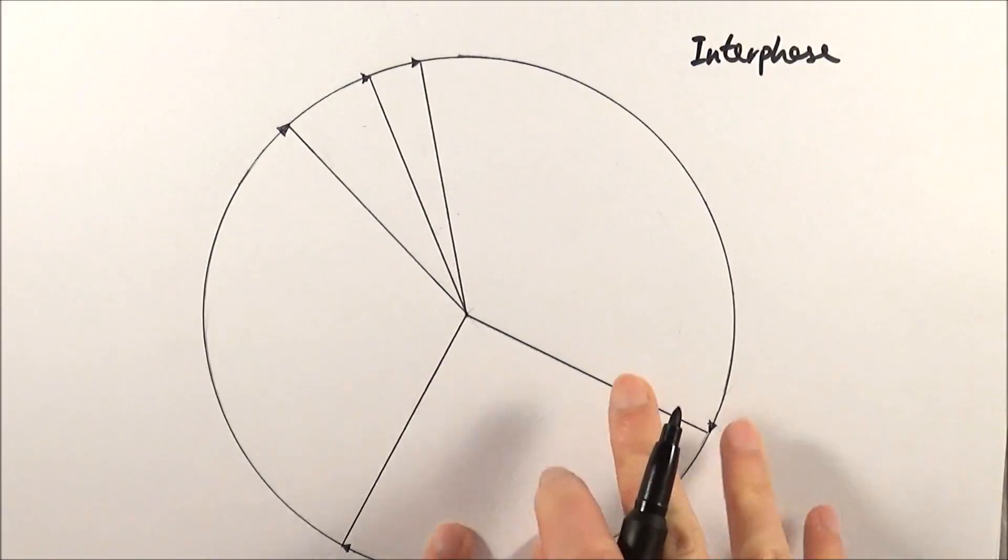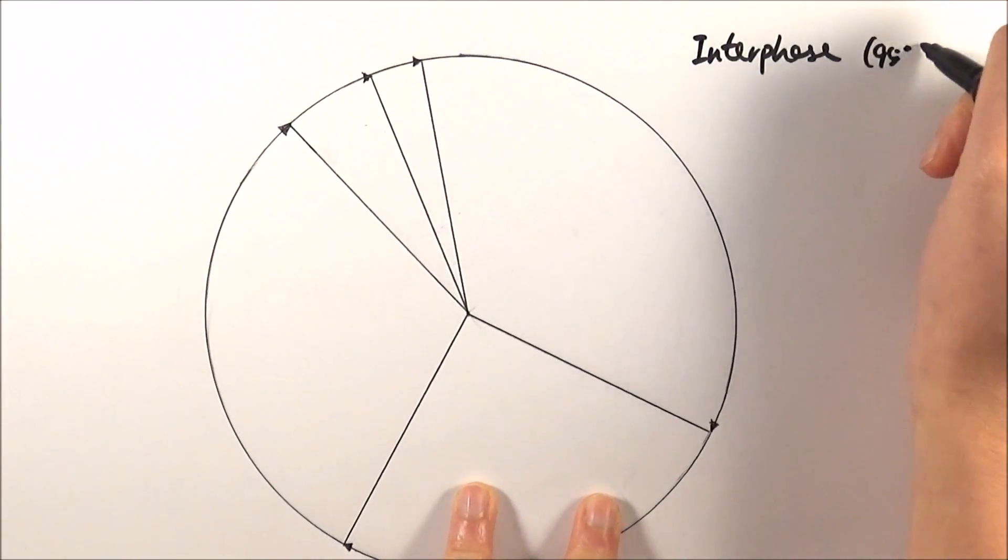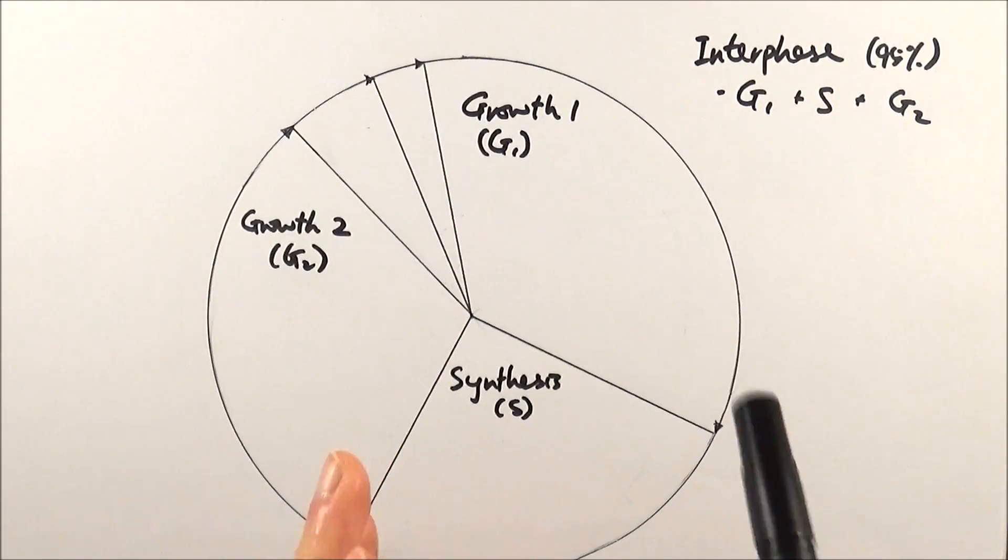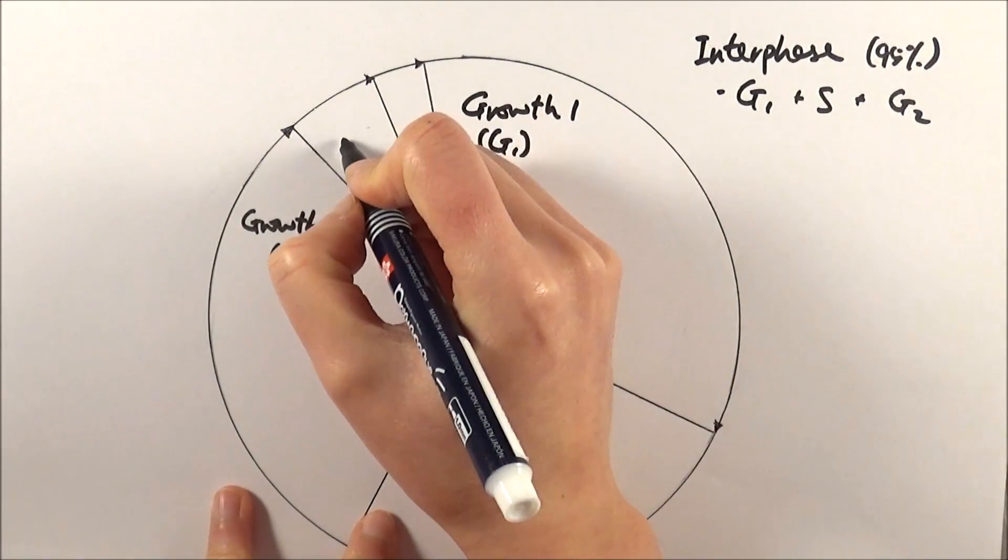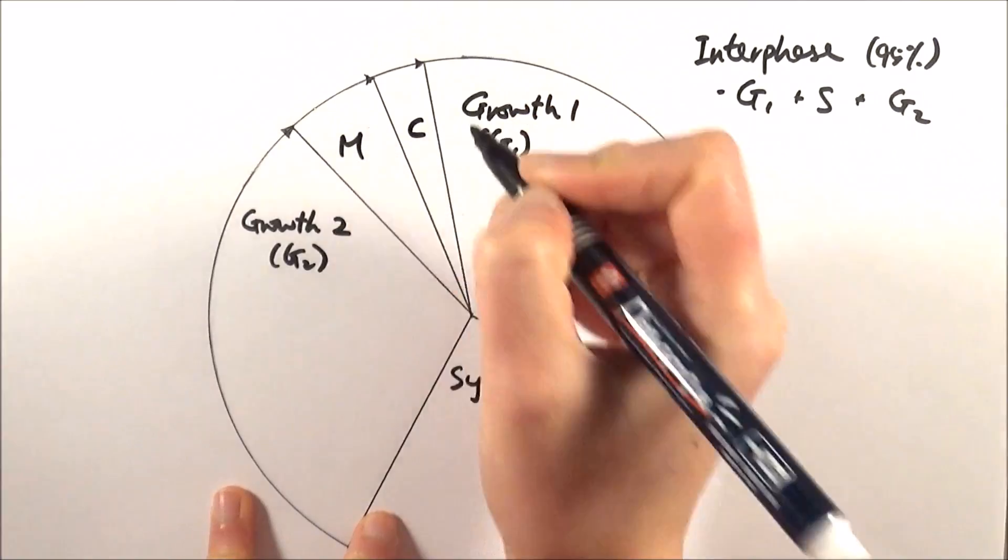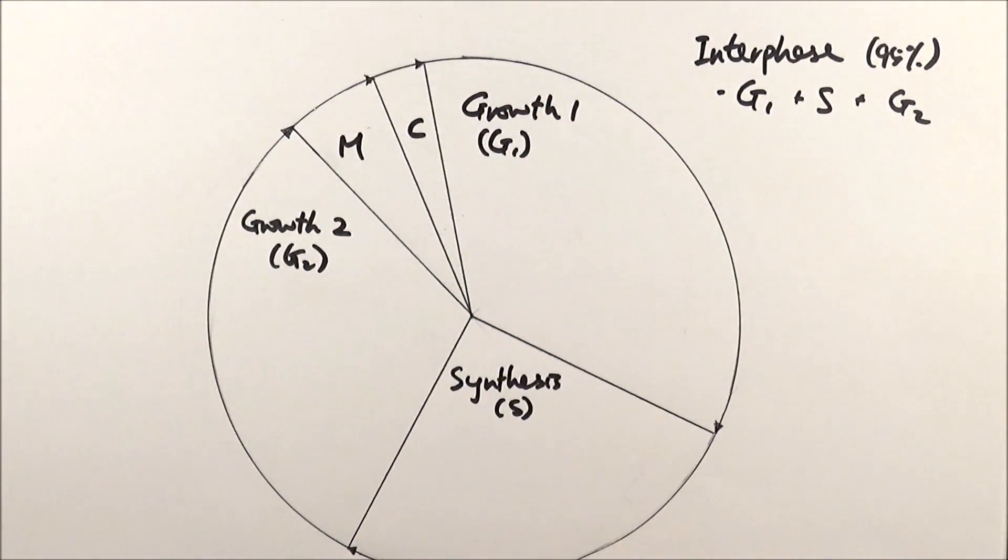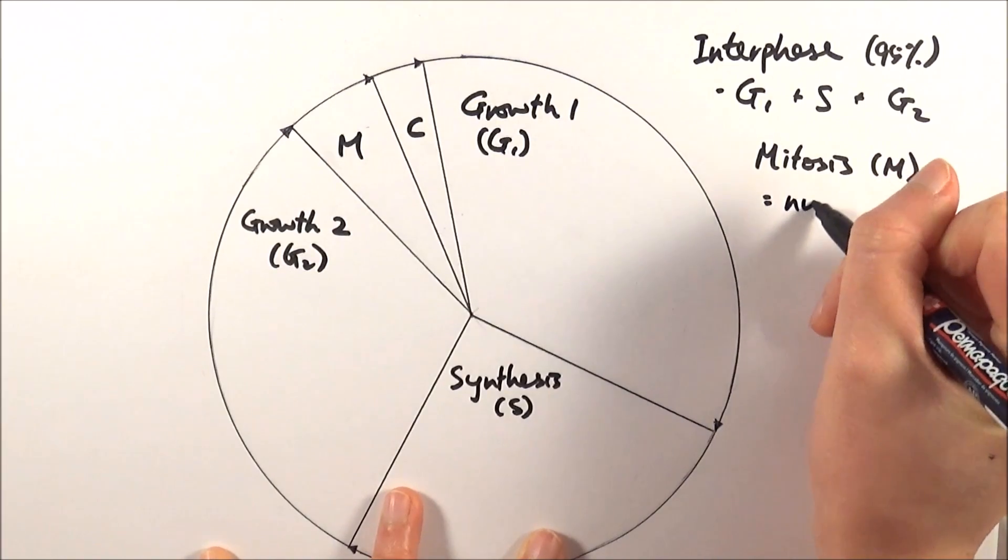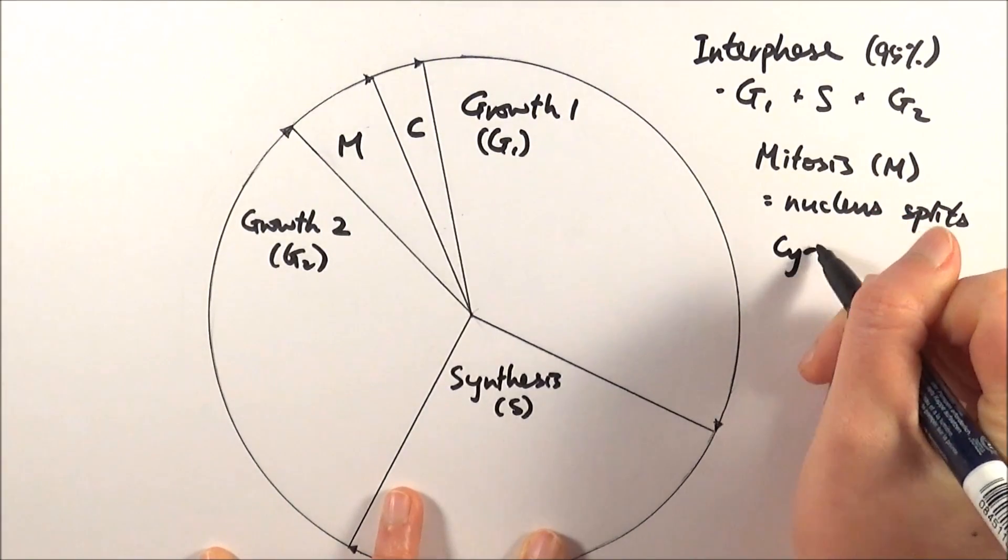It's important to understand that interphase makes up about 95% of the entire cell cycle. Interphase has three phases: growth one, synthesis, and growth two. These are the preparation steps before we actually do mitosis, which is this bit here, and also cytokinesis, which is the splitting of the cell. Mitosis is the splitting of the nucleus and cytokinesis is the splitting of the cytoplasm.